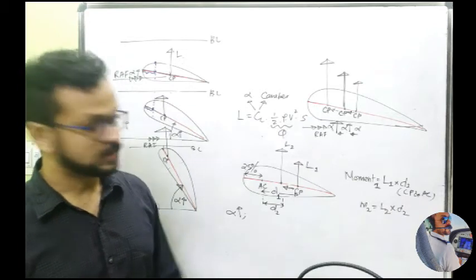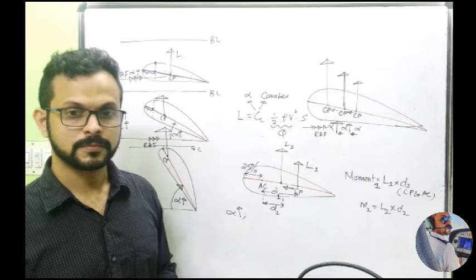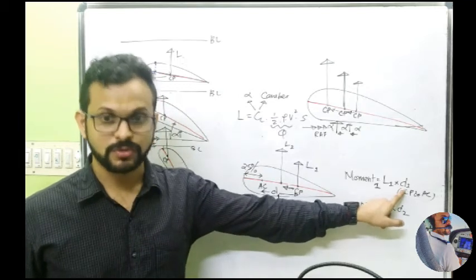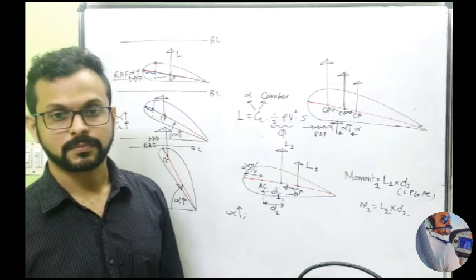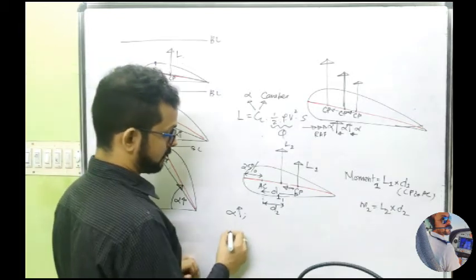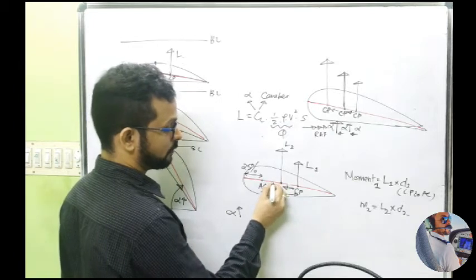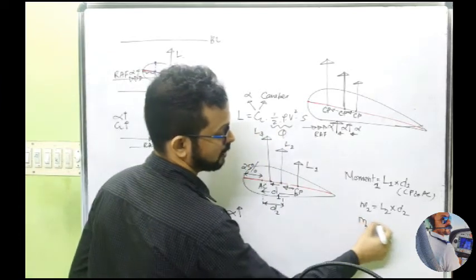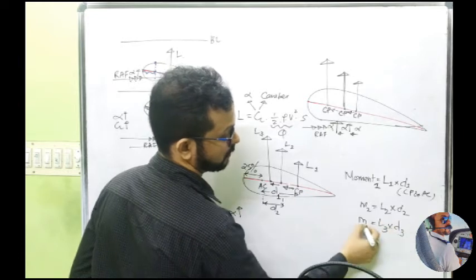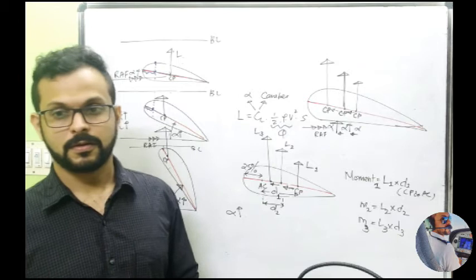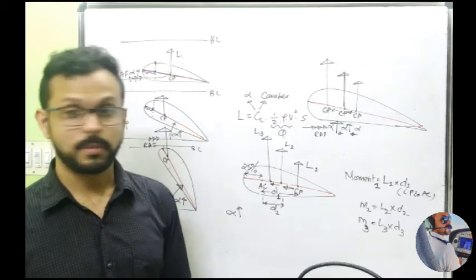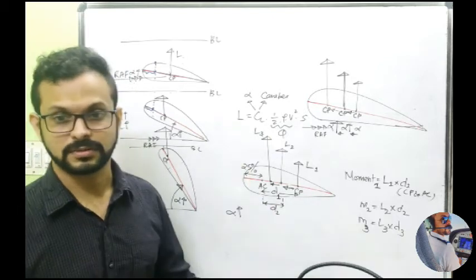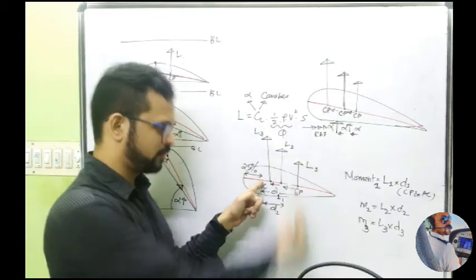How can you compare M1 and M2? Has the moment increased or decreased? The moment is the same. Even though the lift has increased from L1 to L2, simultaneously the distance has reduced from d1 to d2, and the net product remains the same. Now if I increase the angle of attack further, CP moves further forward, lift increases again to L3, and the moment M3 = L3 × d3 — that is also going to be the same.